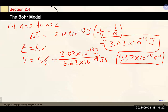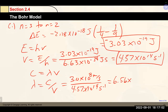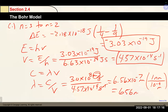For wavelength using c = λν: λ = (3 × 10⁸ m/s) ÷ (4.57 × 10¹⁴ s⁻¹) ≈ 6.56 × 10⁻⁷ m. Converting to nanometers: approximately 656 nm, which corresponds to a red-orange color.